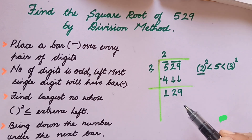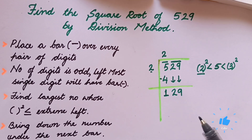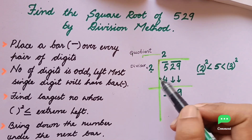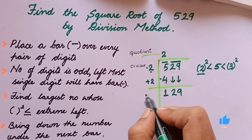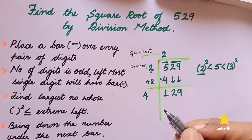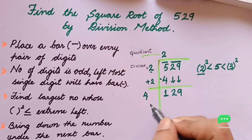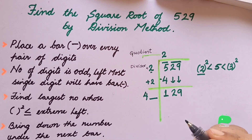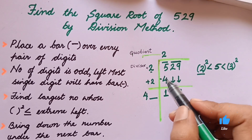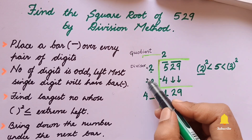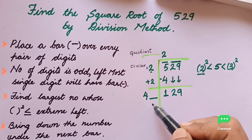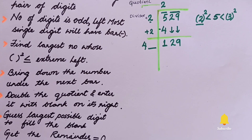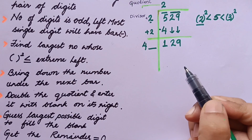The next step is to double the quotient — that is, add the divisor to itself. 2 plus 2 gives us 4. We write 4 here with a blank on its right side. So we have doubled the quotient and written it with a blank.